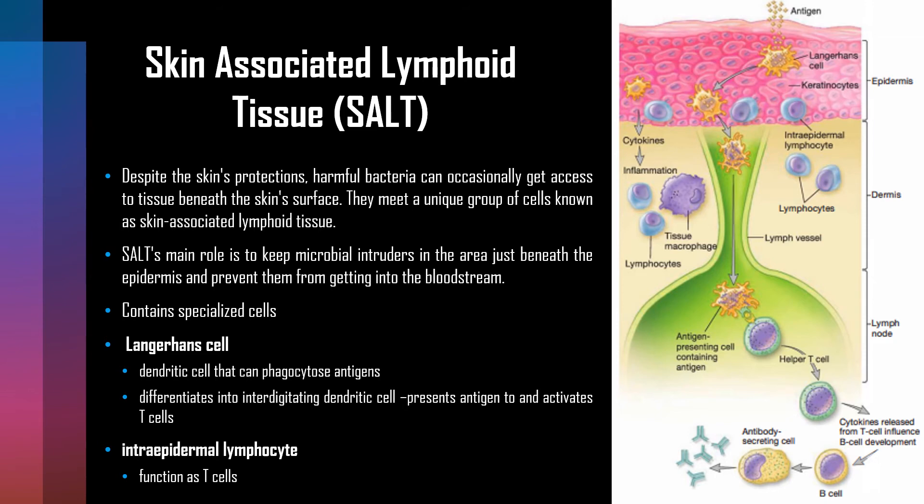Langerhans cells are dendritic cells that can phagocytose antigens, differentiate into interdigitating dendritic cells, and present antigens to activate T cells. Intraepidermal lymphocytes function as T cells. The figure on the screen represents the skin associated lymphoid tissue.